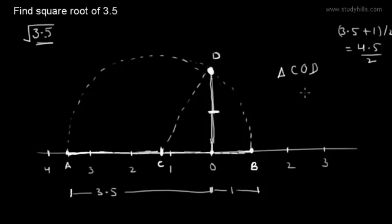Here, length OD will be equal to the square root of 3.5. And now we can again draw one more semicircle using point O as center and OD as radius.